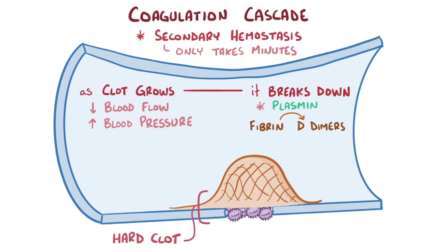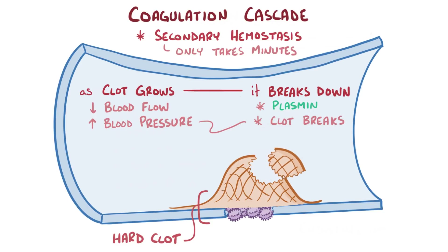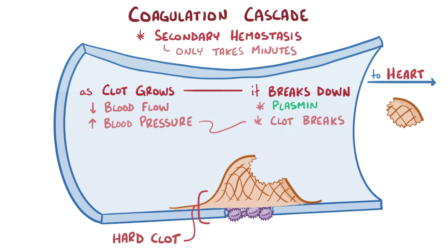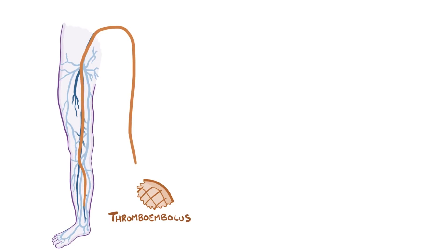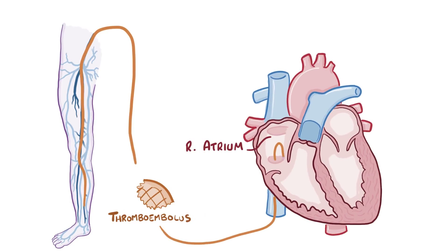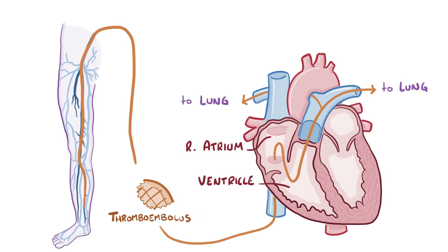But sometimes that increased pressure in the vein can cause a part of that main clot to break free, becoming a thromboembolus, which can travel downstream towards the heart. A thromboembolus, which is a blood clot on the move, can move from the spot of clot formation and get into the right atrium, and then into the right ventricle and get pumped into the lungs where it can get lodged someplace, causing a pulmonary thromboembolism.